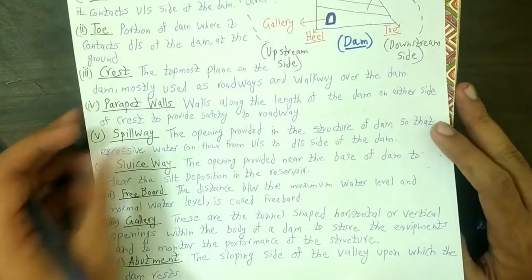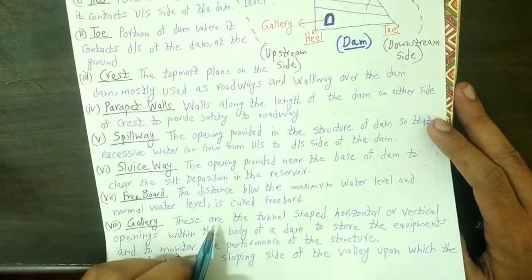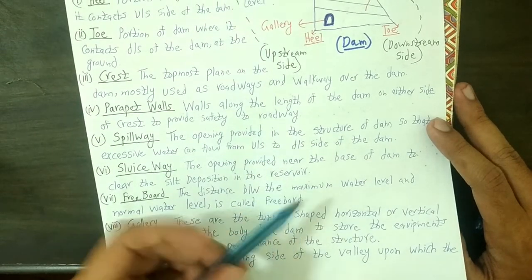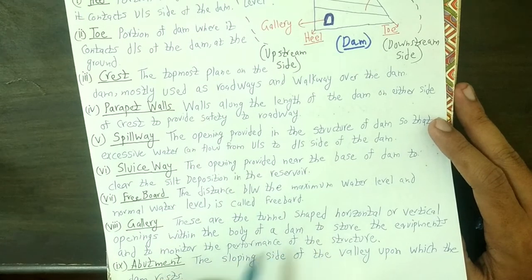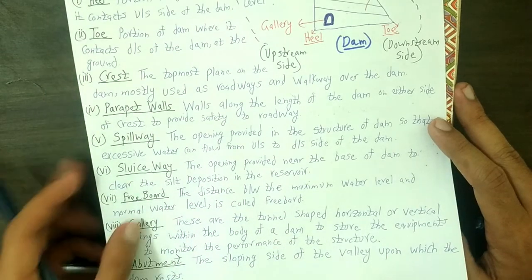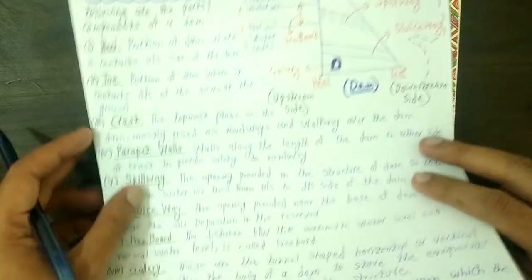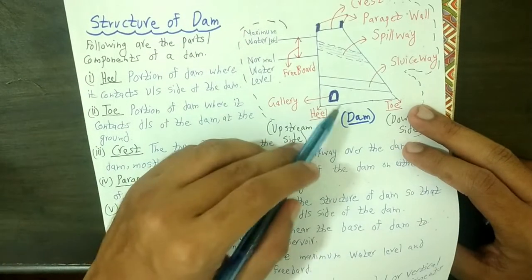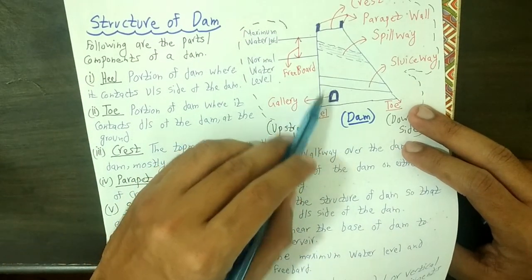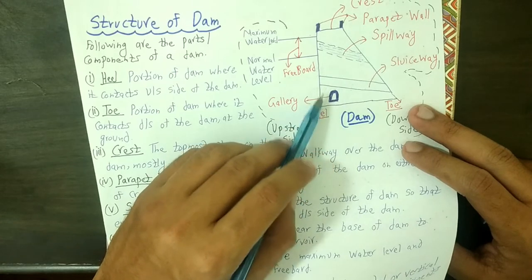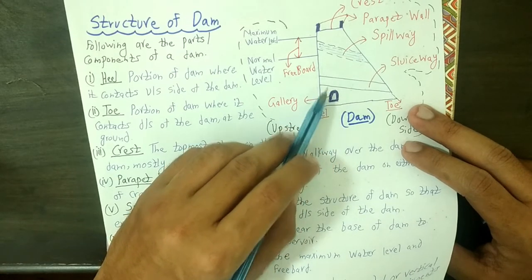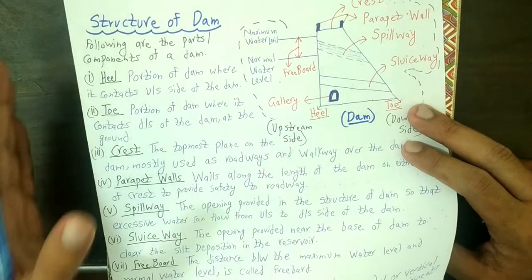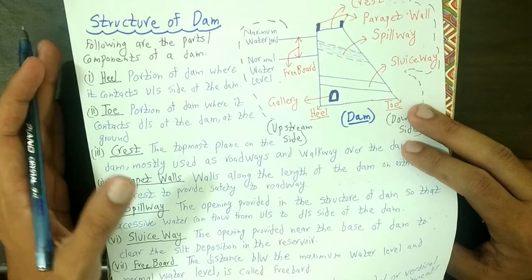Next we will talk about the gallery. Galleries are the tunnel-shaped horizontal or vertical openings within the body of a dam, used to store equipment and to monitor the performance of the structure. Looking at the diagram, this object is our gallery — you can see it is tunnel-shaped.